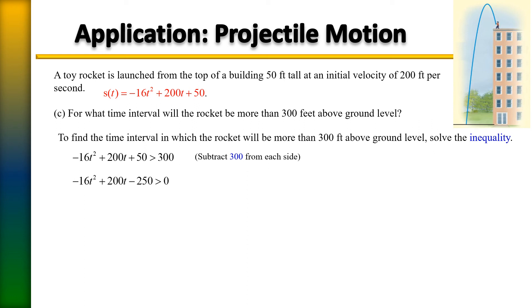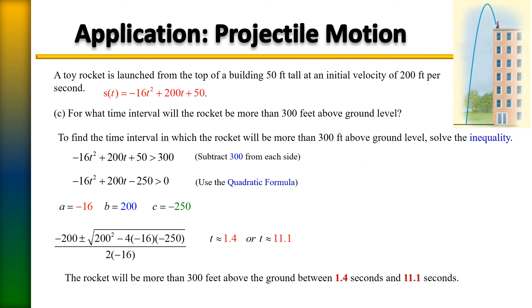So if we plug those into the quadratic formula, it's going to look like so. Continue to simplify. And what we get are two solutions: t is 1.4 and t is 11.1. And so to state that, the rocket will be more than 300 feet above ground between 1.4 seconds and 11.1 seconds.